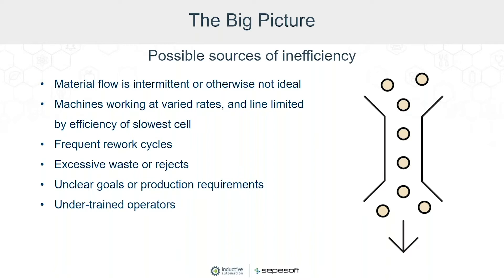Another possible source of inefficiency is whether material flow is intermittent or otherwise not ideal. Are you seeing big waves of parts and then they slow down? Do machines not work at continuous rates? If machines work at varied rates, are they limited by the efficiency of the slowest cell? It almost helps to think of your plant as a one-lane road — you're limited by that slowest car causing traffic to back up for miles. Similarly, a group of hikers is often constrained by their slowest member.